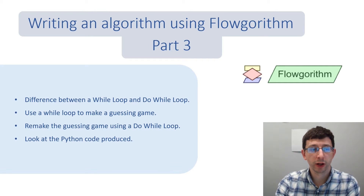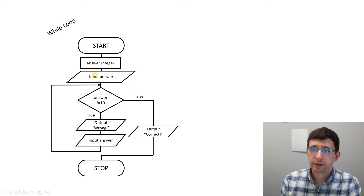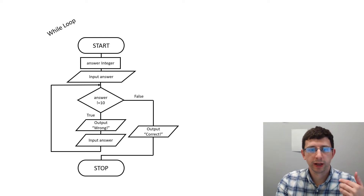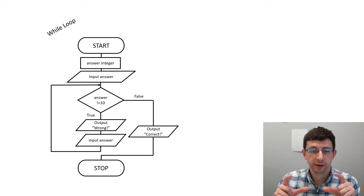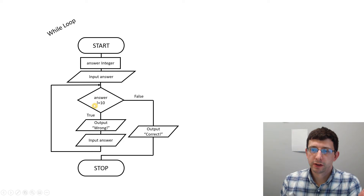Let's start by looking at the while loop and its flow diagram for the simple game. We first declare the variable 'answer' as an integer, then get the user to input their answer. We then reach this diamond shape, which is the standard way of representing a condition — just like with an if statement. The condition here is: answer is not equal to 10.